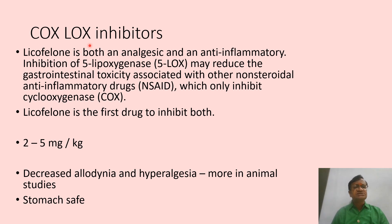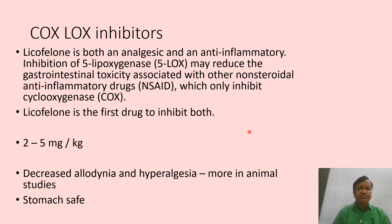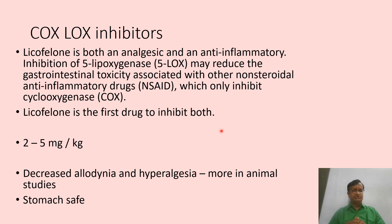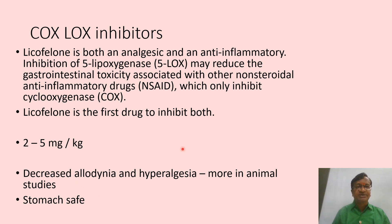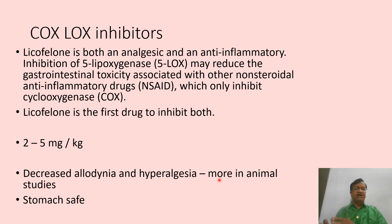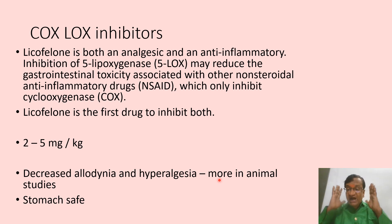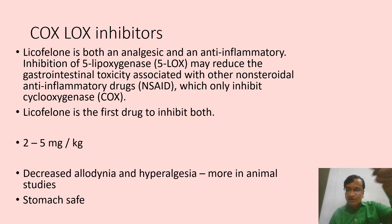COX-LOX (cyclooxygenase-lipoxygenase) inhibitors target both pathways simultaneously. Licofelone is the first such drug at 2–5 mg, and studies show it decreases allodynia and hyperalgesia. If COX-LOX inhibitors like licofelone reach the market at affordable prices, they would target both acute and chronic pain.